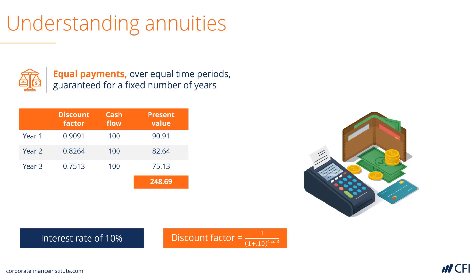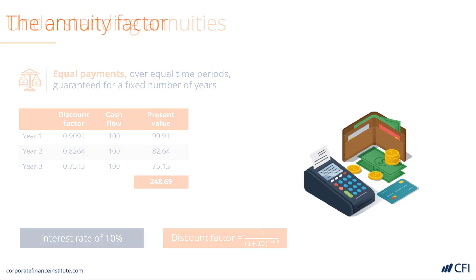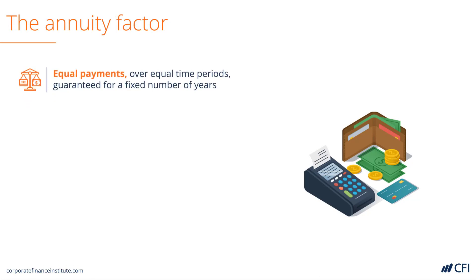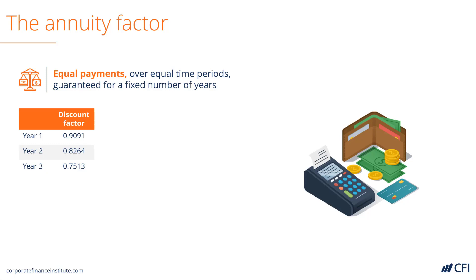That is how much we would be prepared to pay to receive it. If you sum these discount factors, what do you notice? Our three discount factors are 0.9091, 0.8264, and 0.7513 for years 1, 2, and 3 respectively.